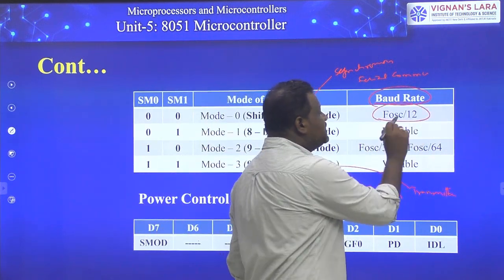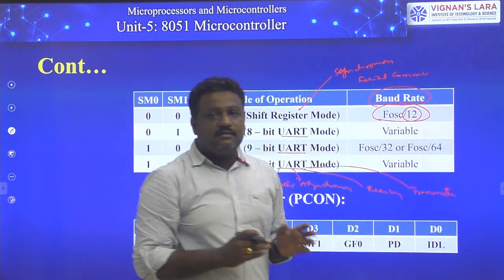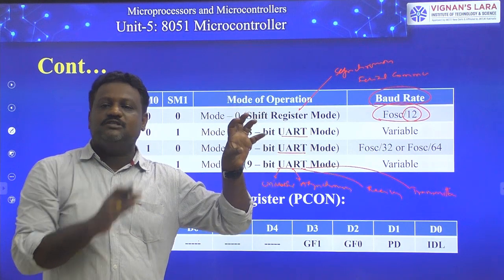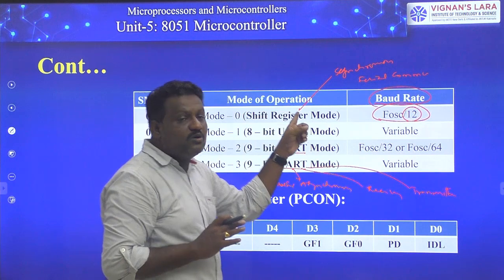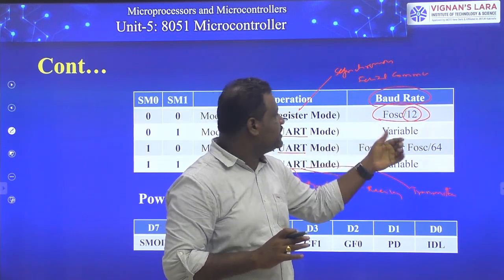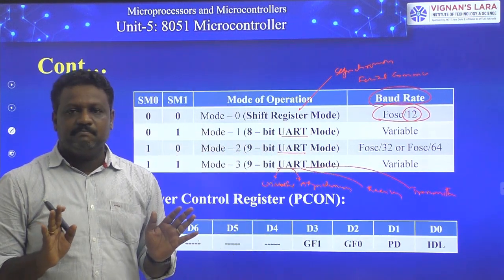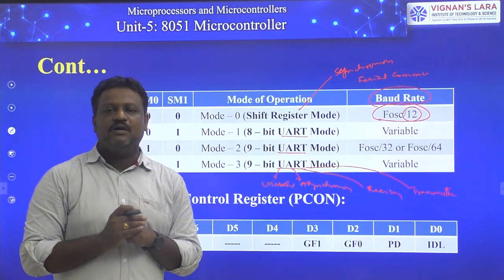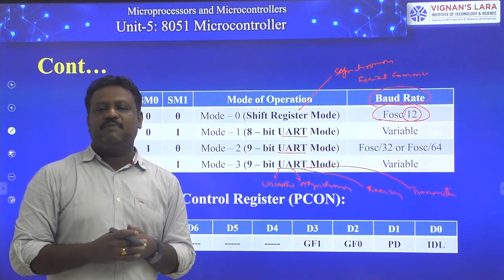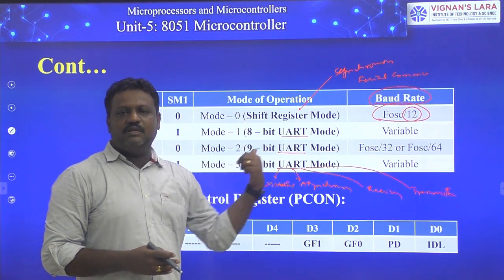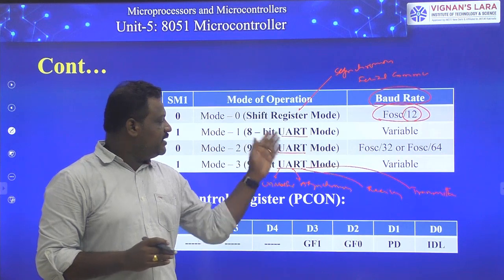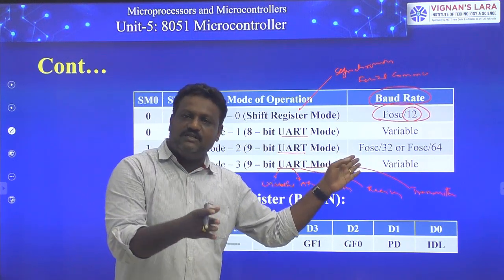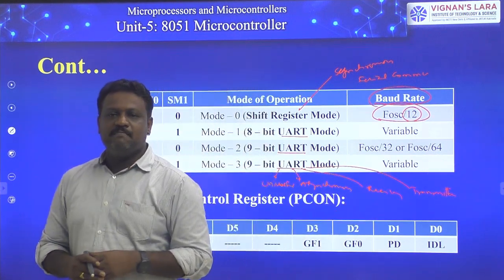For Mode 0 (synchronous), the baud rate is F_oscillator divided by 12, because one machine cycle takes 12 clock cycles. For Mode 1, the baud rate is variable — it is set using the timers. For Mode 2 (9-bit UART), the baud rate is fixed: either F_oscillator divided by 32 or F_oscillator divided by 64. For Mode 3 (also 9-bit UART), the baud rate is again variable, determined by the timers.